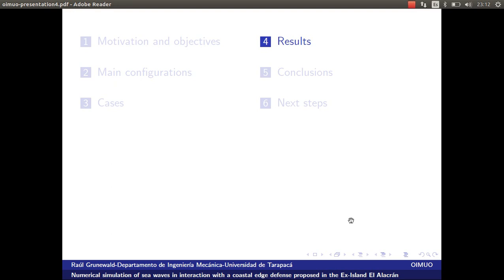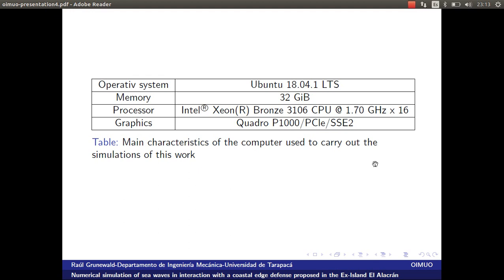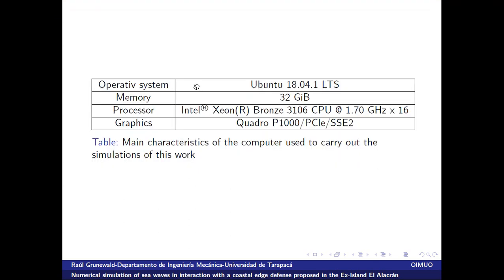For the simulation results, the operating system used was Ubuntu 18.04.1 LTS, memory is 32 gigabytes, the processor has 16 cores, and 16 cores were used for each case. The graphics board characteristics are also noted. These are the specifications of the computer used to carry out the simulations.